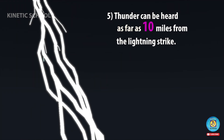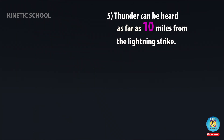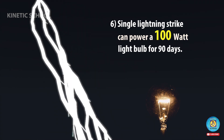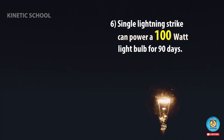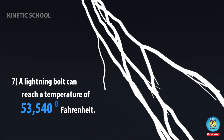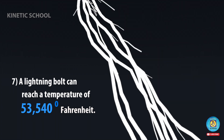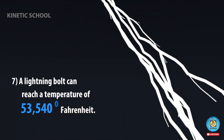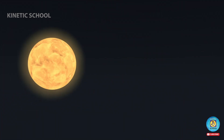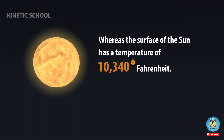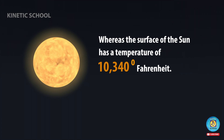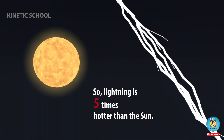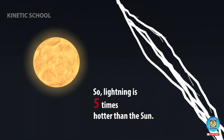Thunder can be heard as far as 10 miles from the lightning strike. A single lightning strike can power a 100-watt light bulb for 90 days. A lightning bolt can reach a temperature of 53,540 degrees Fahrenheit, whereas the surface of the Sun has a temperature of 10,340 degrees Fahrenheit. So lightning is five times hotter than the Sun.